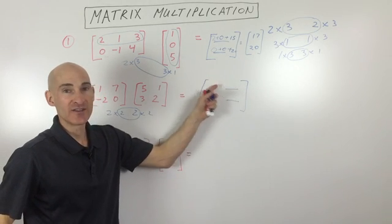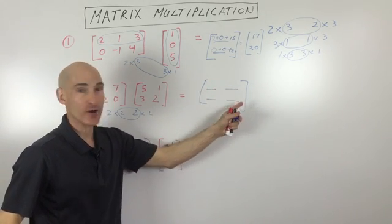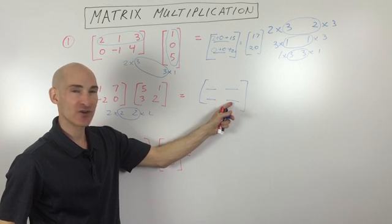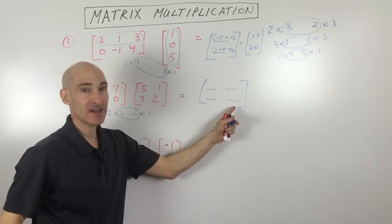Sometimes you don't need every element in this matrix. You're maybe just interested in, say, like this one. So you don't have to go in order. You can just say, well, I want this one right here. So you say, what position is that in? Well, it's in the second row, second column.